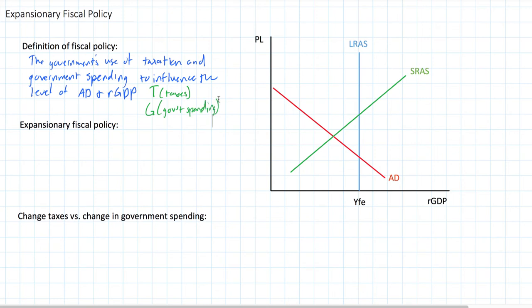Policymakers can influence the level of spending on public goods, on infrastructure, on education, health care, defense, on transfer payments, and all sorts of other things that put money in the pockets of the nation's households or contribute to the nation's supply of capital goods or infrastructure goods. Taxation is where the money comes from — every dollar the government spends it ultimately gets from somewhere, either through taxes or through borrowing from somebody else. So taxation and government spending together make up the two tools in the toolkit of fiscal policymakers.